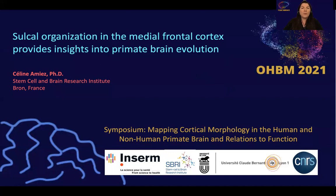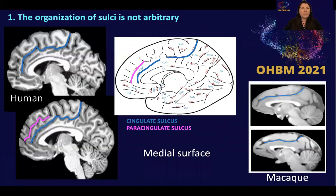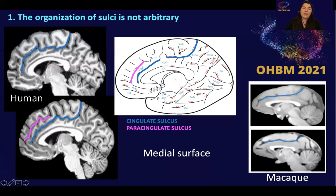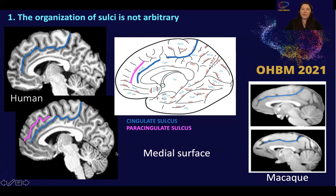So why study sulci? There are three main reasons. The first one is that the organization of sulci is absolutely not arbitrary. Looking at the medial wall, which is the topic of this talk, it's characterized mainly by two sulci: the cingulate sulcus, present in all hemispheres, and the paracingulate sulcus, present in only about 70% of subjects in at least one hemisphere. It's a secondary sulcus occurring later in utero. In the macaque, the cingulate sulcus is also present in all hemispheres.